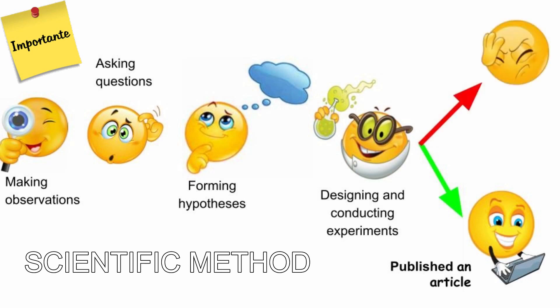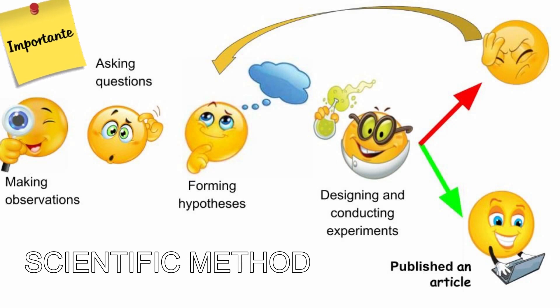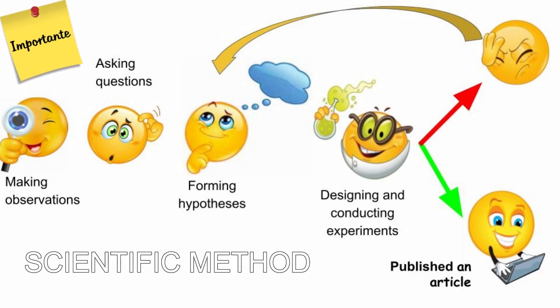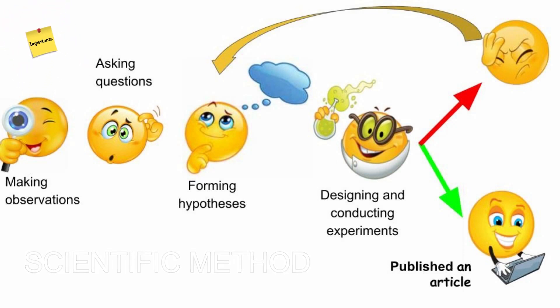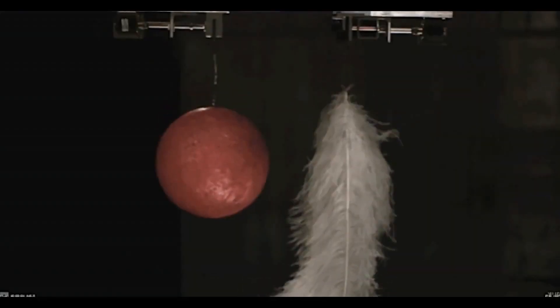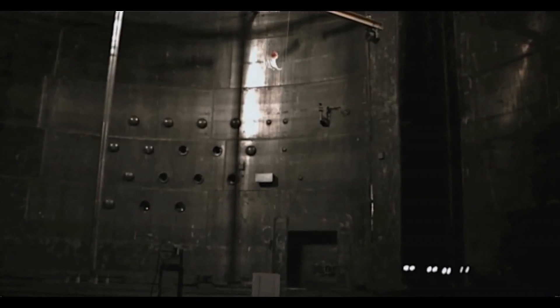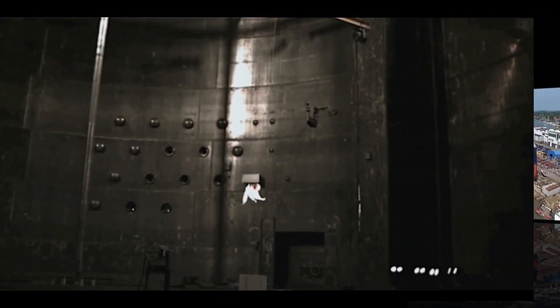If the initial hypothesis is invalidated, a new hypothesis and experiment can be created. For a hypothesis to be considered valid, it has to make predictions about natural events.